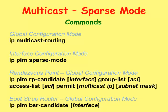On the rendezvous point router, the IP PIM RP candidate command creates a rendezvous point. An access list command is used to define the scope of the multicast IP address. The IP PIM BSR candidate command creates a bootstrap router that communicates the IP address of the rendezvous point to the other routers. We can choose to put the rendezvous point and bootstrap router on the same router or on separate routers.